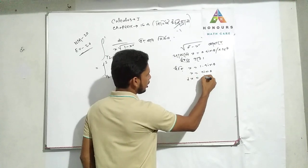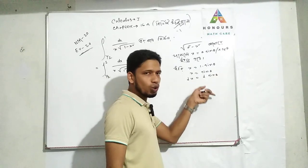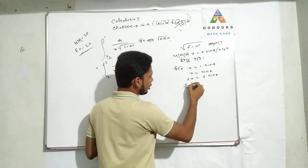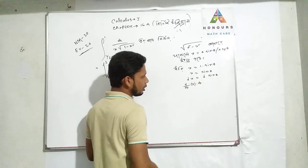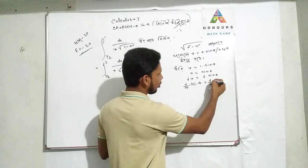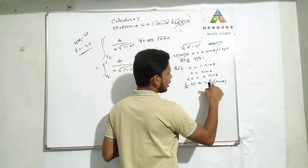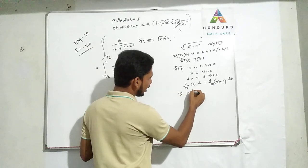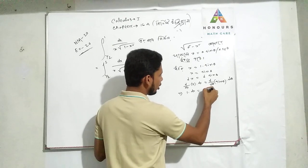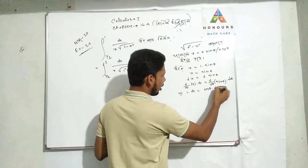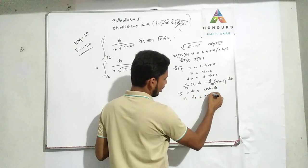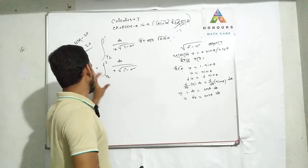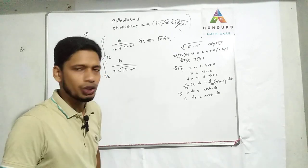We do dx equals d of sin theta. We use differentiation. So if we differentiate x and use d of sin theta, we do differentiate x. So we do dx. I am going to show you: dx equals the derivative by d theta of sin theta, and this d theta is applied, so dx equals cos theta d theta. The integral becomes: x is 1 times dx equals sin theta, and cos theta d theta.